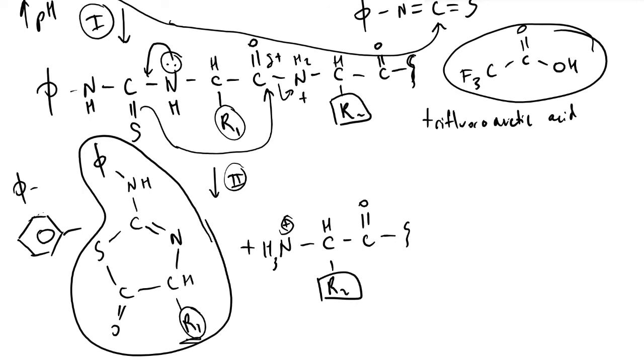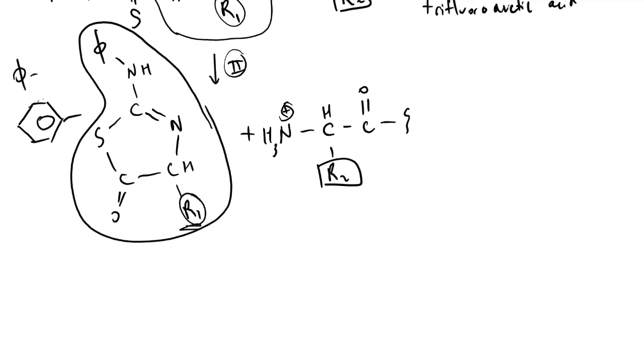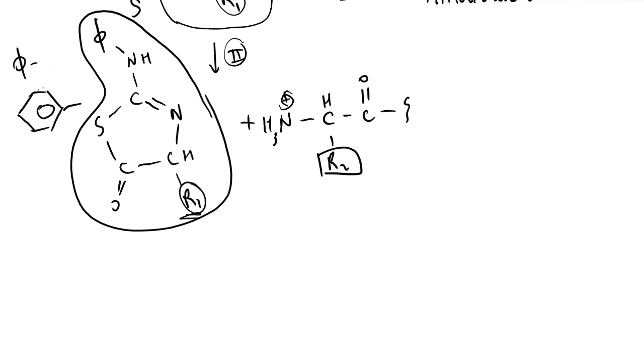This next step in Edman degradation is the critical part that allows us to control the rate or control precisely the number of amino acids that we take off from our amino acid sequence. We only want that to be one.